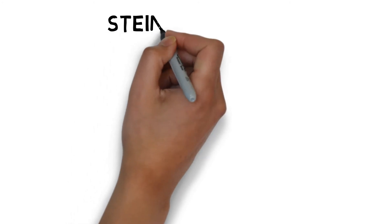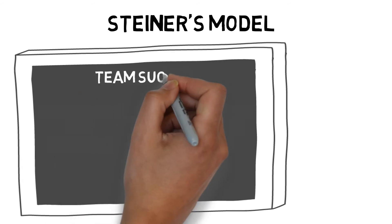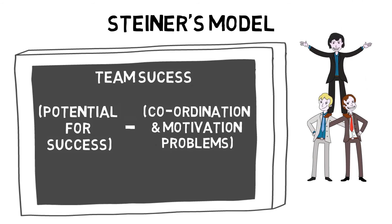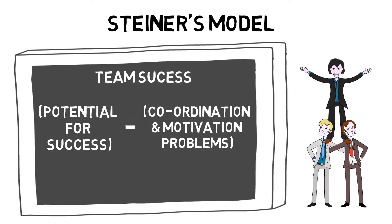Steiner's model suggests that team success equals potential for success minus coordination and motivational problems. Potential for success suggests that the members with the highest ability make the best team, and individual success usually means team success. Coordination problems occur when there is a high level of interaction between players, but one or more members are too selfish or aggressive and the overall team performance suffers. Motivation problems occur when one or more members work less than the rest of the group, such as in a scrum or in a rowing team.